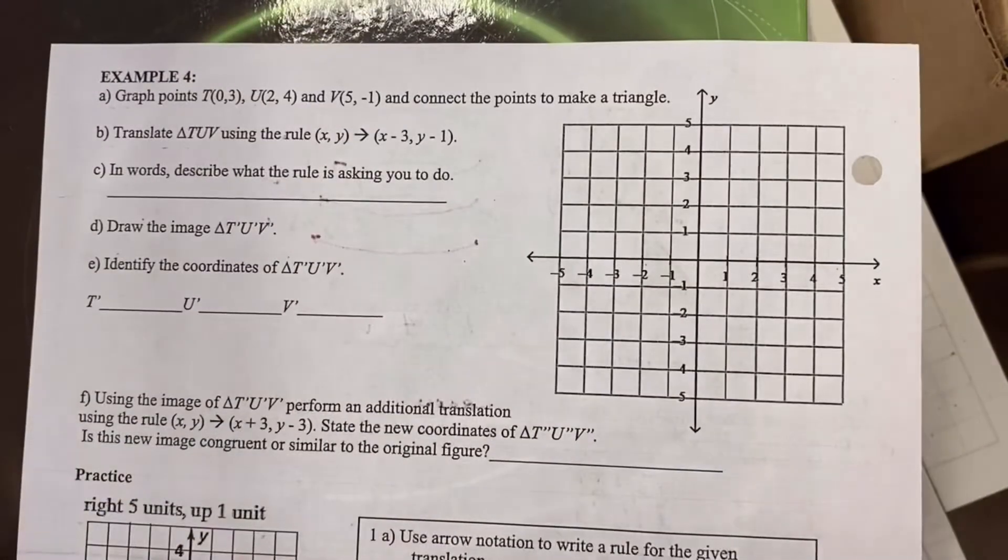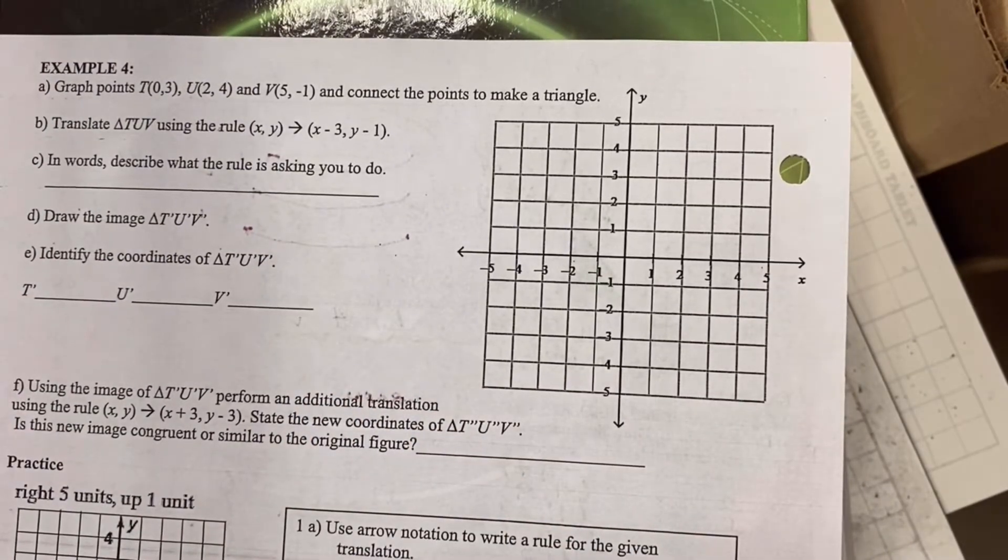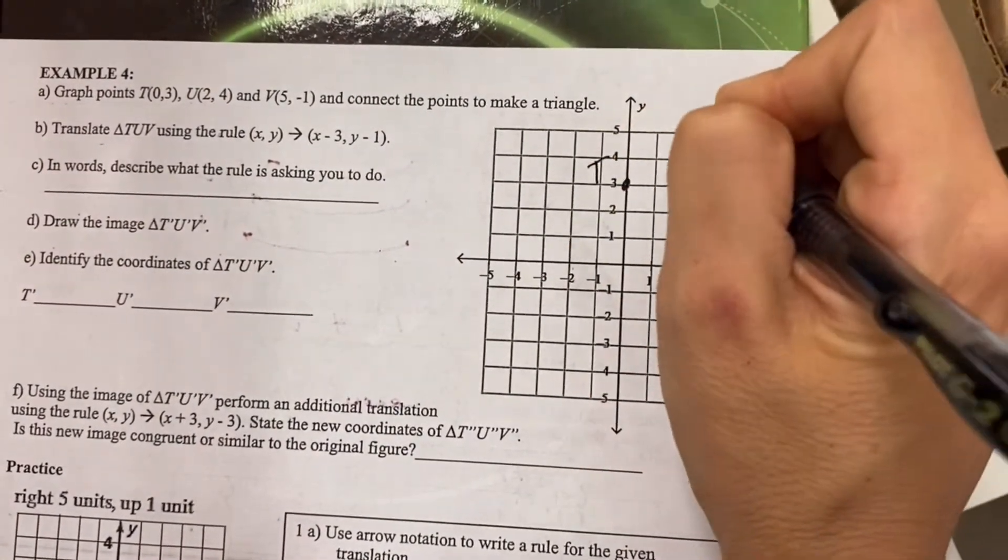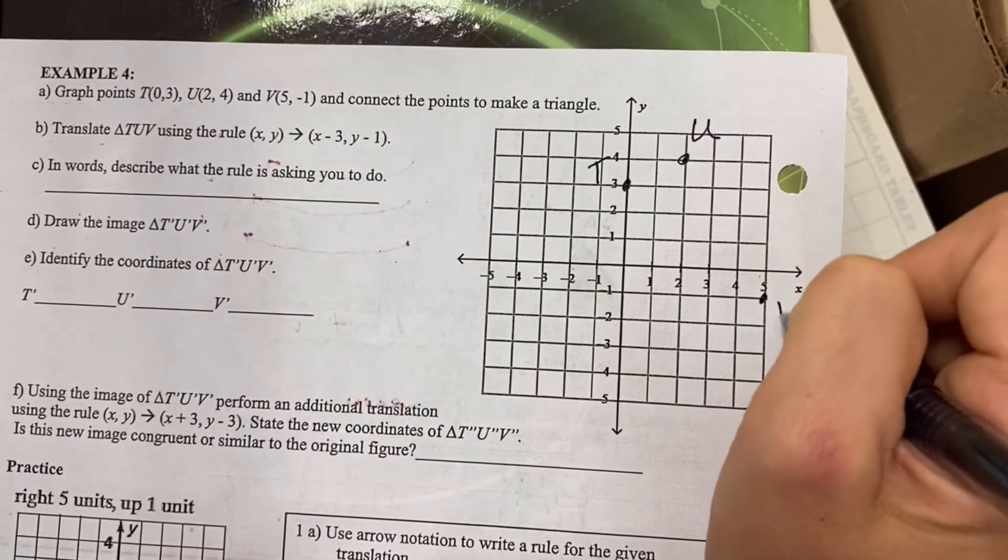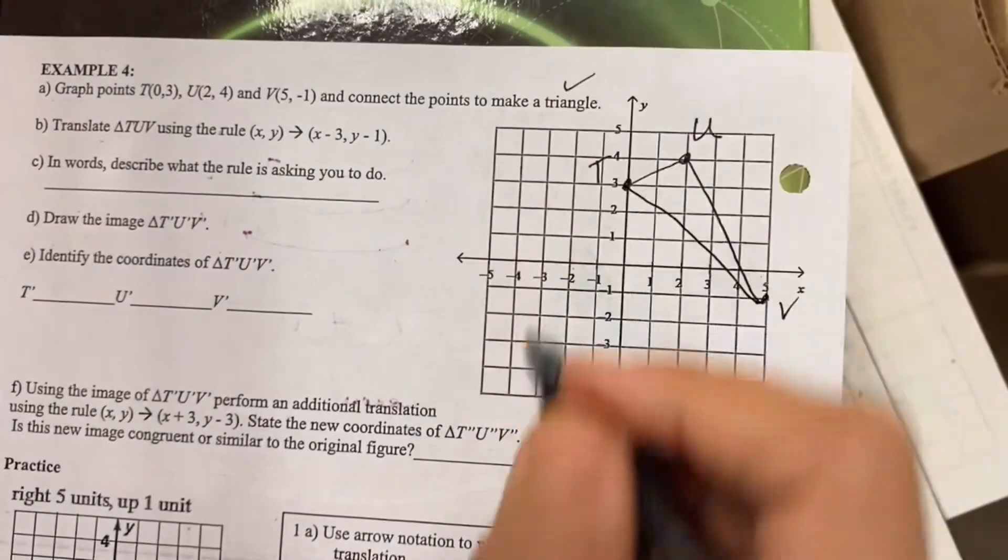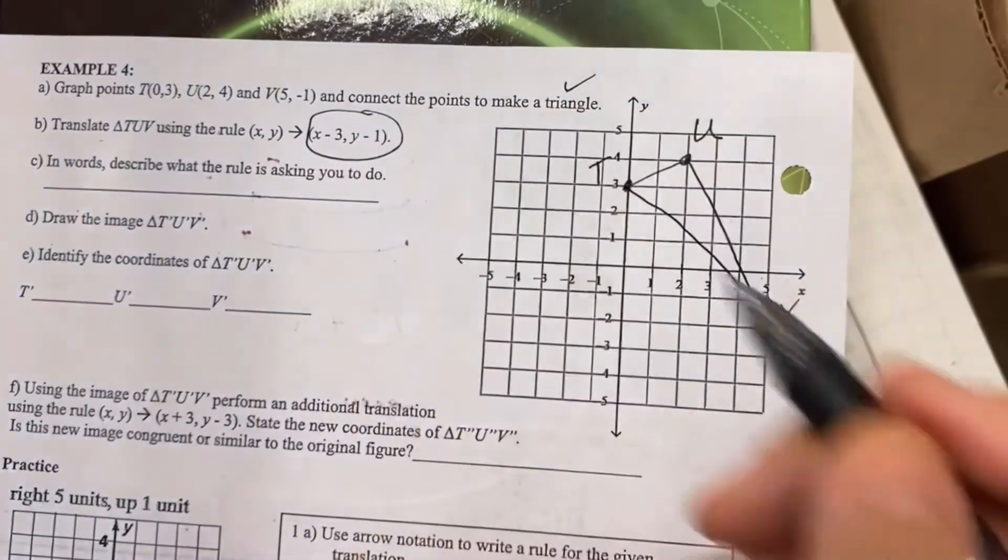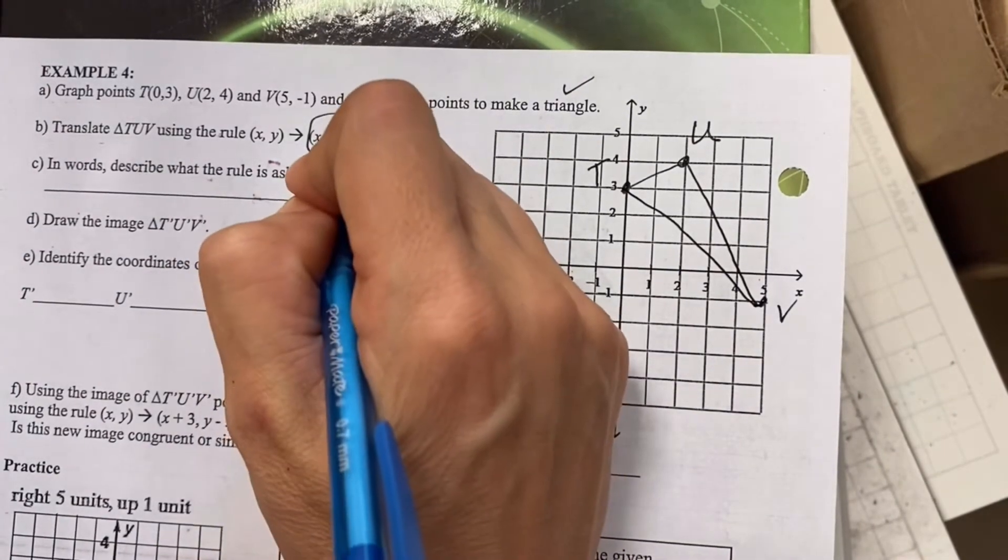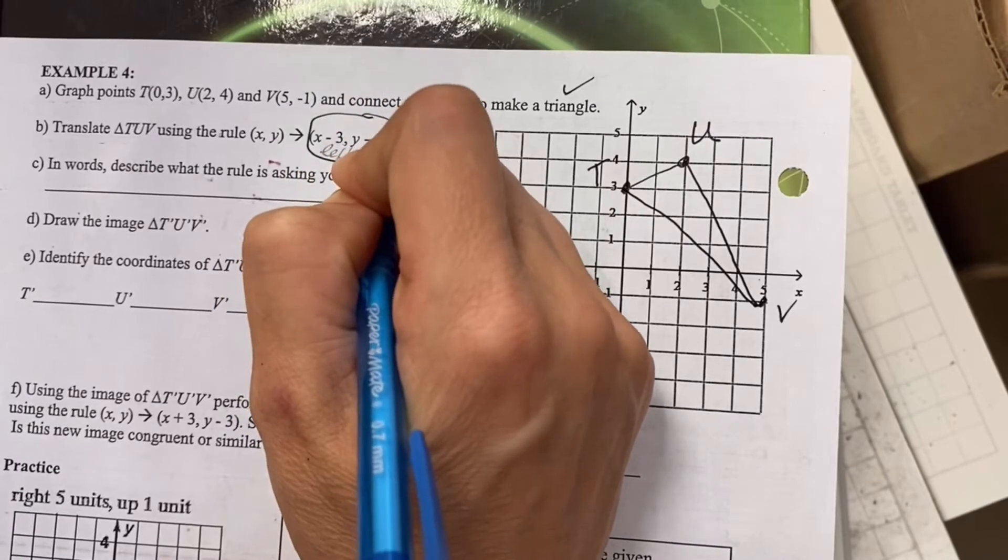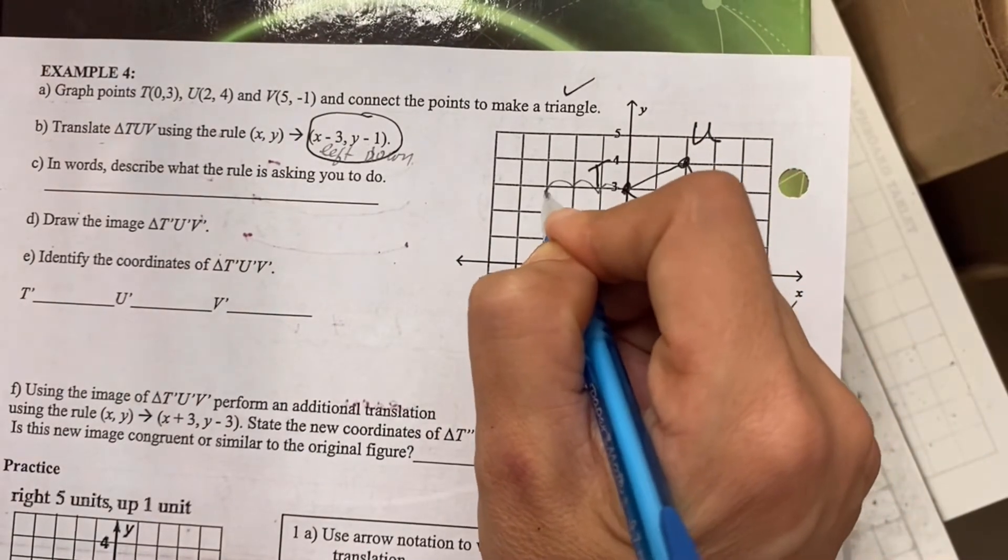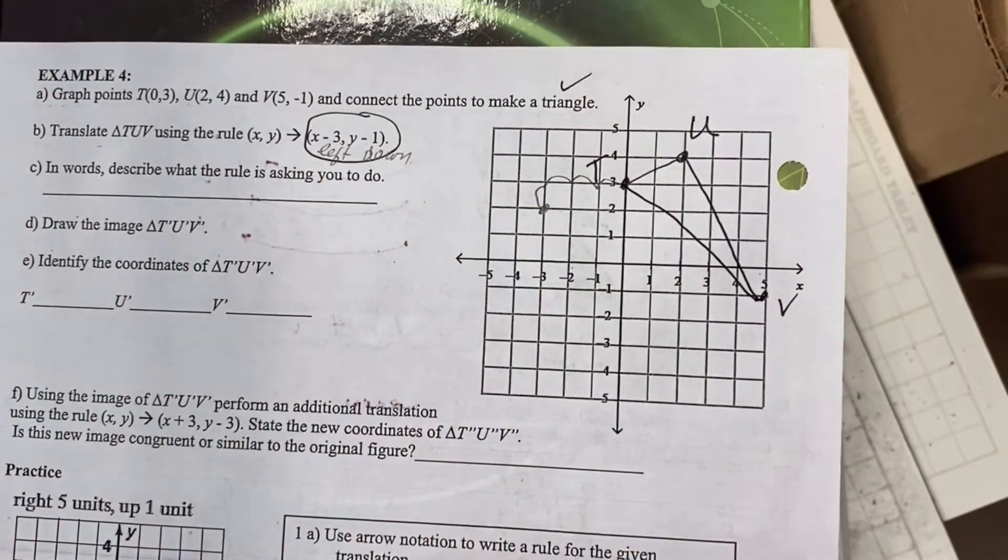Now for the back. Let me check my time. Let's see how the back goes. So example four says graph these points and connect them to make a triangle. Translate it using this rule. So they're not adding three. So this must be the opposite of going right. It must mean I need to go left. And instead of going up, it looks like I had to go down. So I'm going to go left three, one, two, three, and down one. And that's going to be my new location of T.